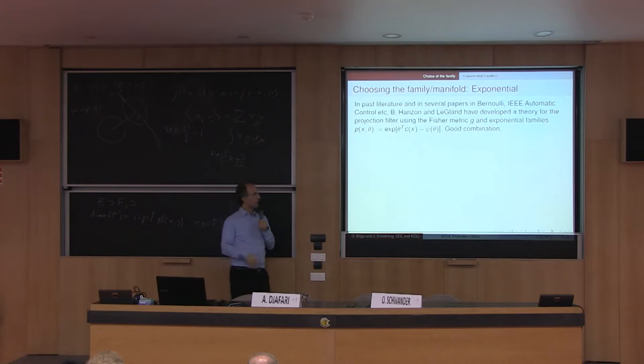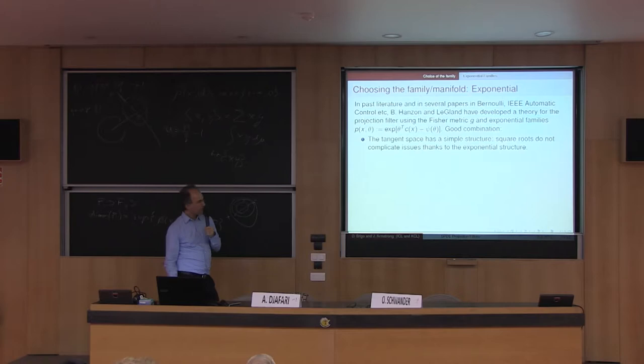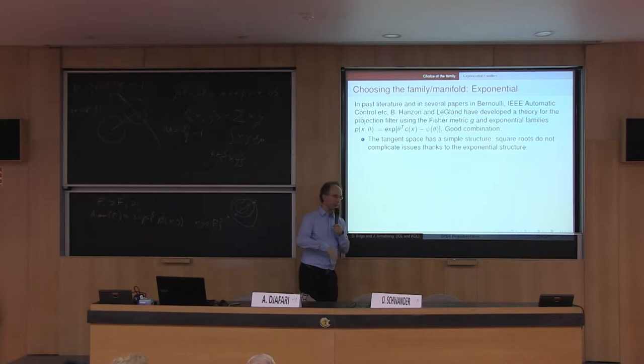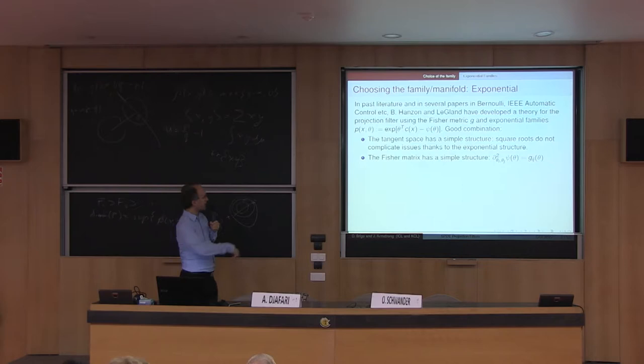One first choice, related to work done in the 90s, is exponential families. From the work of Giovanni Pistone, Amari, Barndorff-Nielsen, and many others, we know that exponential families have good geometric properties in connection with the Fisher metric and the Hellinger distance. We pick as a parametric family an exponential family where the exponent functions c are multiplied by the parameter in an affine way, with a normalizing constant to ensure they integrate to one.